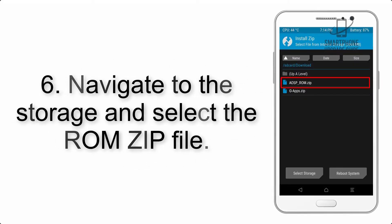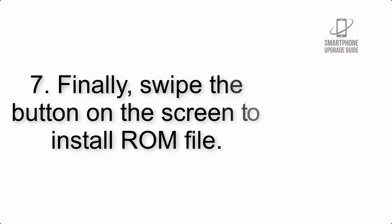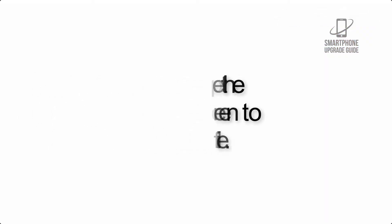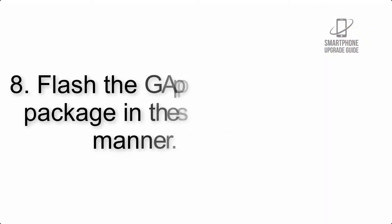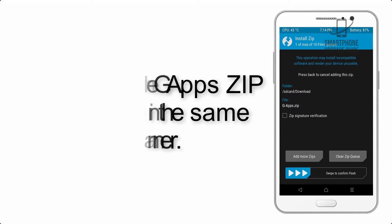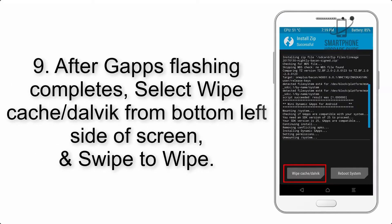Step 5: go back to the recovery main screen and tap on the Install button. Step 6: navigate to the storage and select the ROM zip file. Step 7: swipe the button on the screen to install the ROM file.